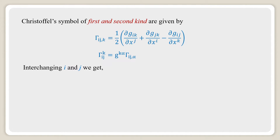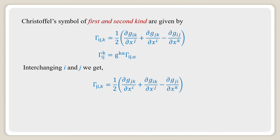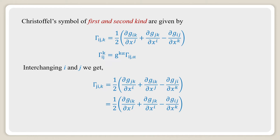Interchanging I and J in the Christoffel Symbol of the first kind, we get Gamma_{JI,K} equals half of (∂g_{JK}/∂x^I + ∂g_{IK}/∂x^J − ∂g_{IJ}/∂x^K), which equals half of (∂g_{IK}/∂x^J + ∂g_{JK}/∂x^I − ∂g_{IJ}/∂x^K), since g_{JI} equals g_{IJ}. Therefore, Gamma_{JI,K} equals Gamma_{IJ,K}.